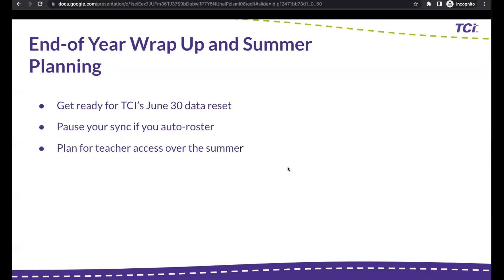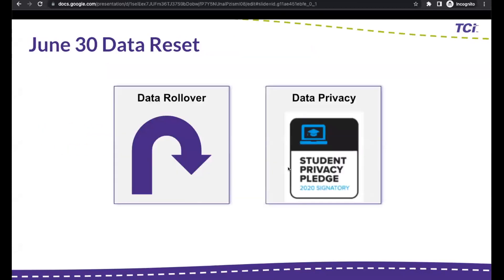Starting off with end-of-year wrap-up and summer planning, we'll help you get ready for our June 30 data reset. We'll talk about your auto roster sync and teacher access over the summer. Our June 30 data reset is rapidly approaching, and if you're familiar with TCI, you know this happens every year. The point is to help you roll over your data from one school year to the next and to comply with data privacy requirements.